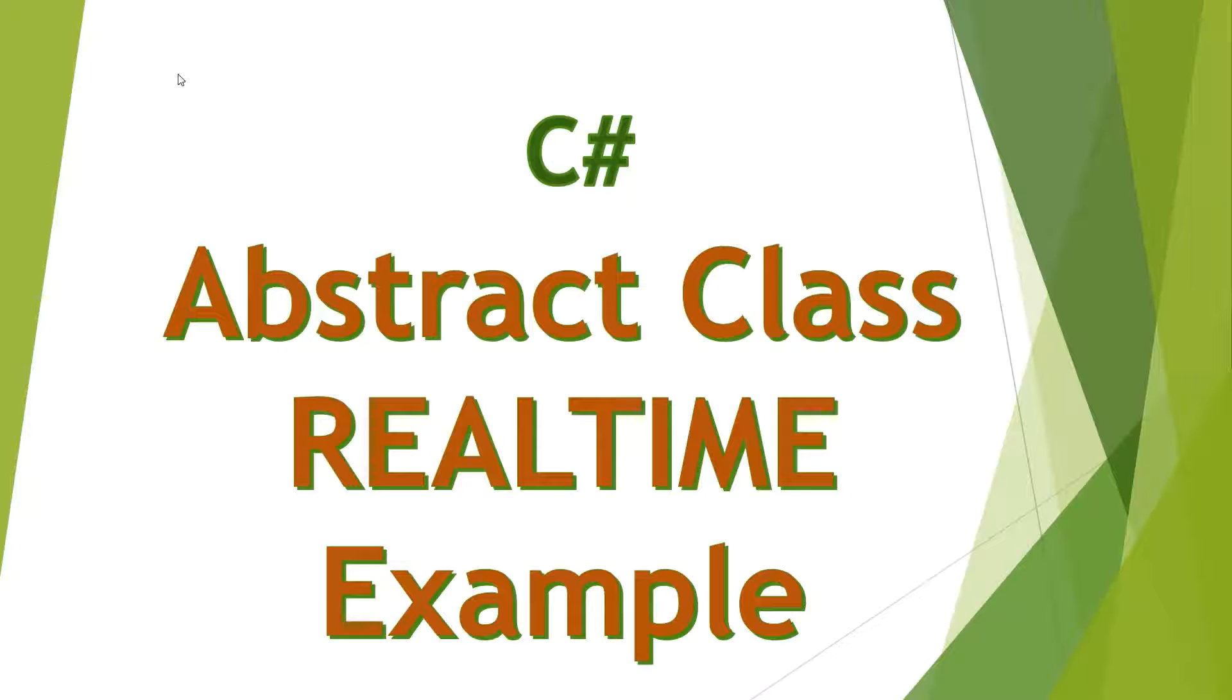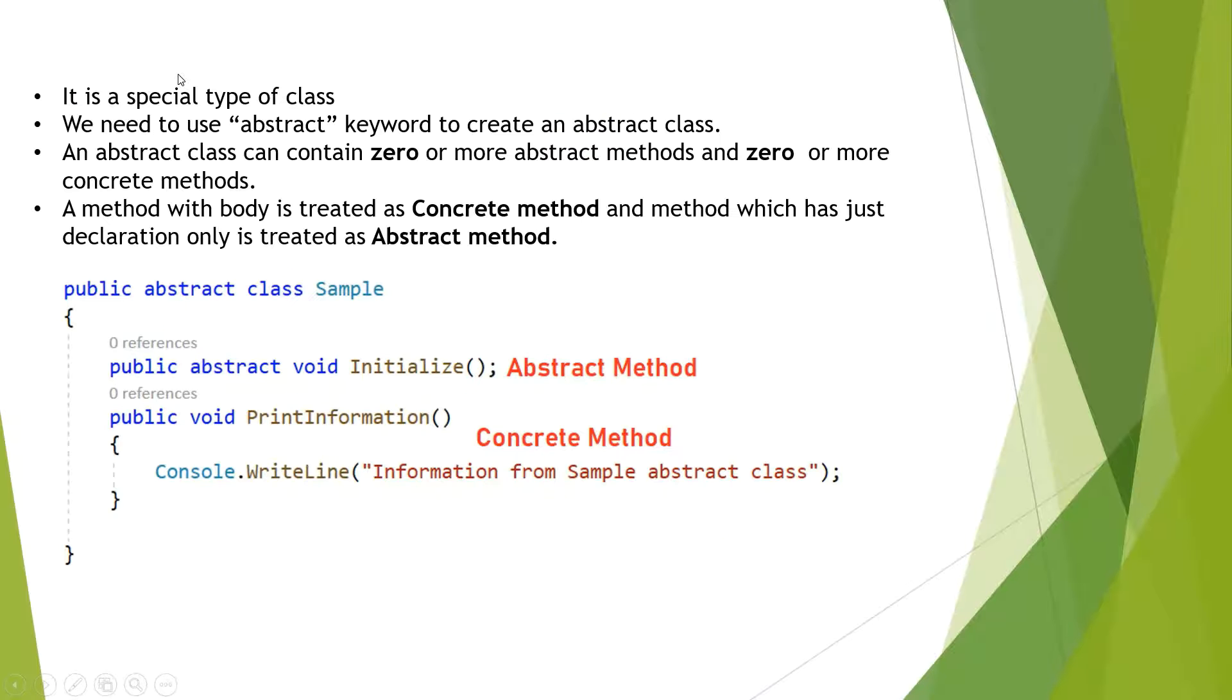So what is an abstract class? An abstract class is a special type of class. We need to use the abstract keyword in the class declaration. Here we have an example. If you see in the class declaration, we have the abstract keyword.